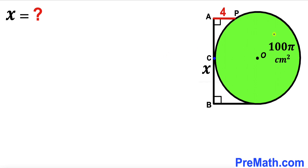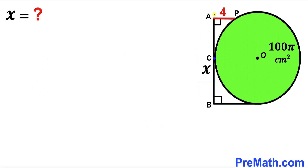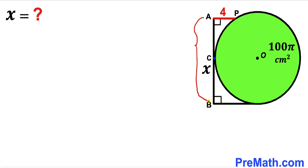Welcome to PreMath. In this video we have a green shaded circle with center O along with its tangent AB, where C is the point of tangency. The length of tangent AB is x centimeters, the horizontal segment AP is 4 centimeters with point P on the circle, and the area of the green circle is 100π square centimeters. Our task is to find the length of tangent AB — in other words, solve for x.